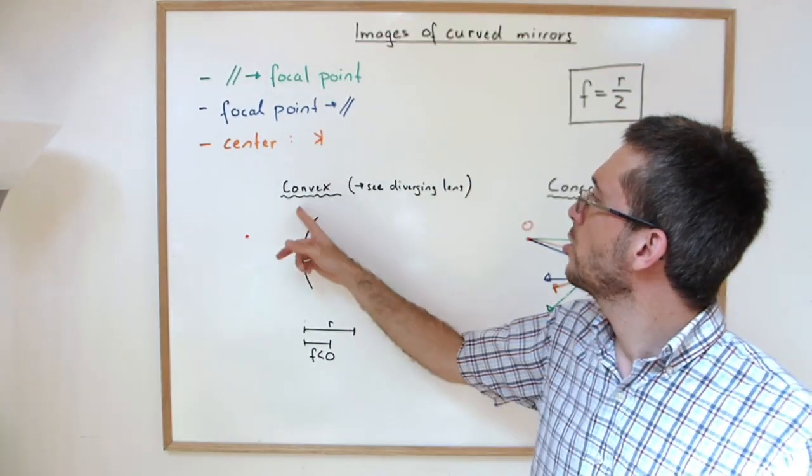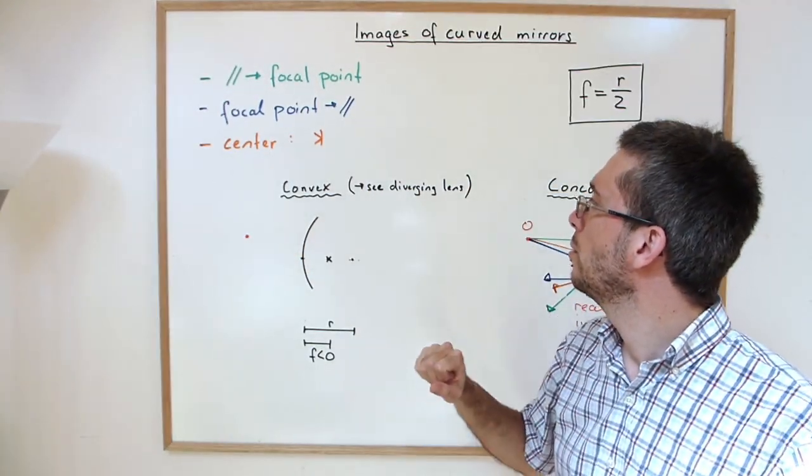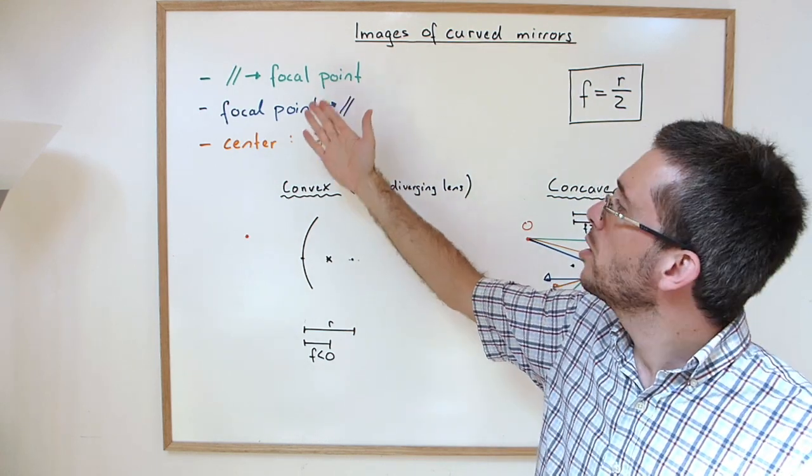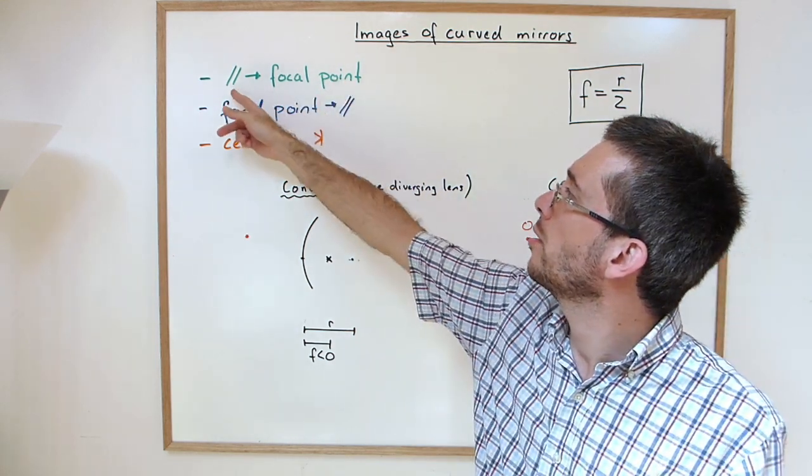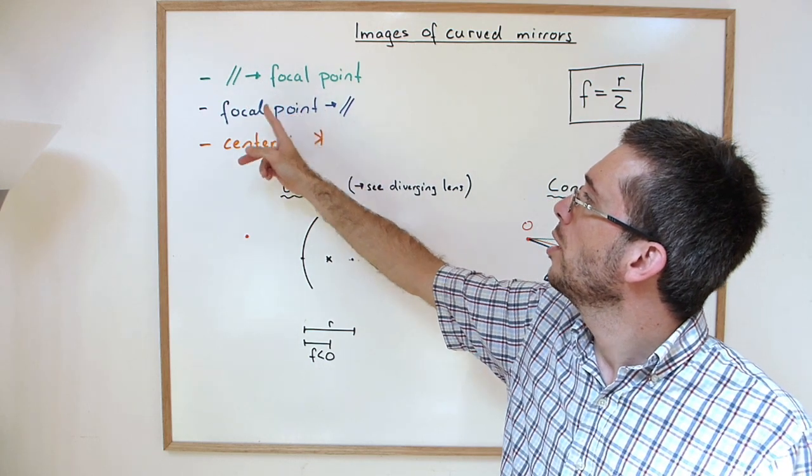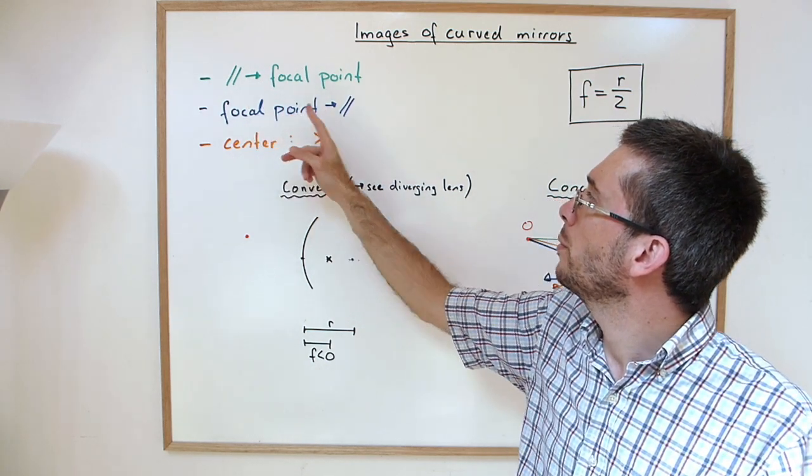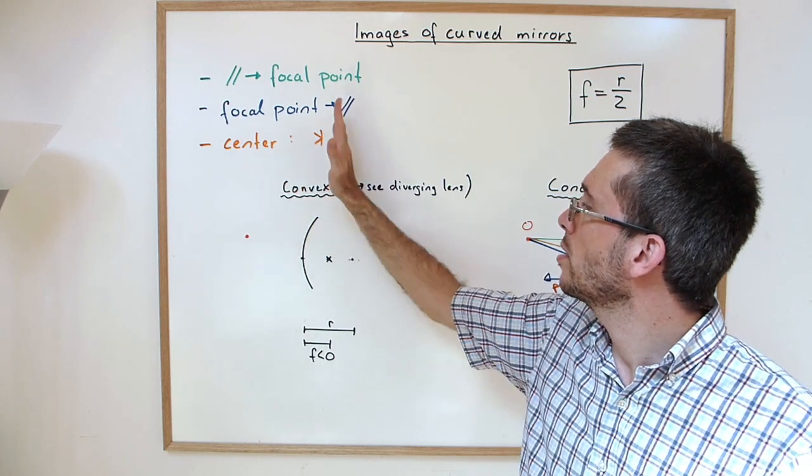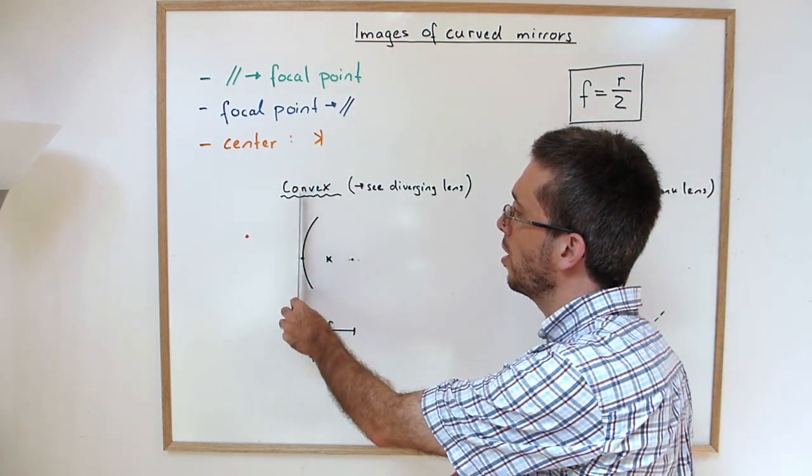To find the image of a convex spherical mirror, we're going to use again our three special rays. The one that is parallel that will go through the focal point, the one that goes through the focal point will become parallel, and the one that goes to the center is reflected as if there would be a plain mirror here.